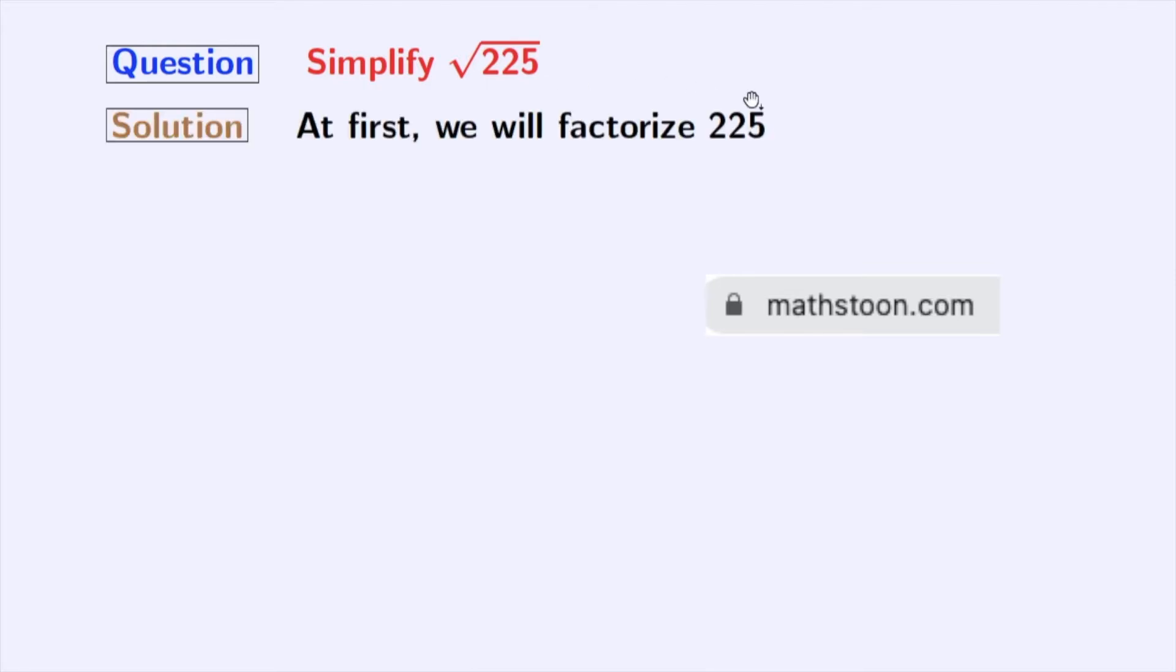Firstly, we will factorize 225. See that the unit digit of this number is 5, so this number will be divisible by 5. We get 225 equals 5 times 45. Following the same logic, 45 is also divisible by 5, so we have 45 equals 5 times 9.